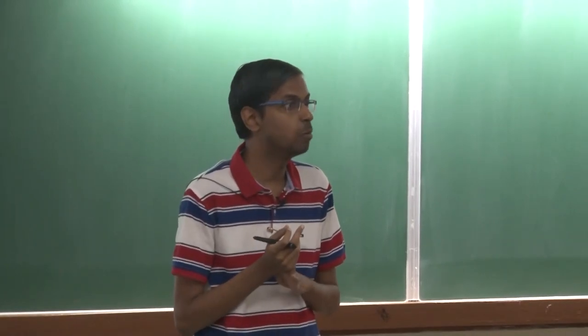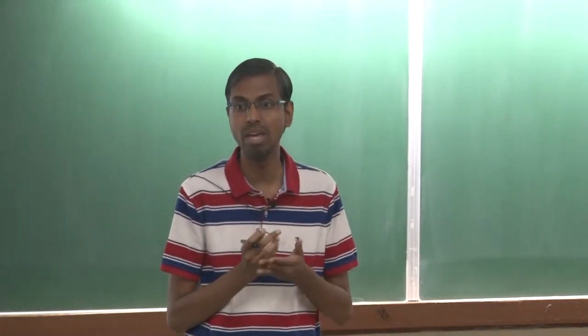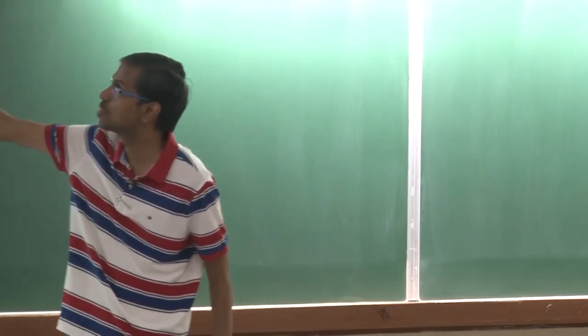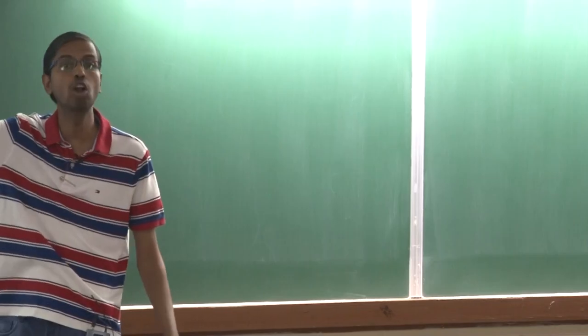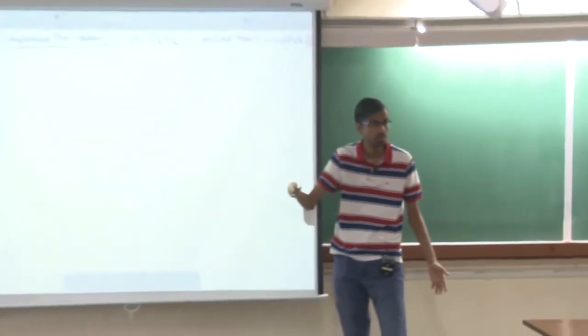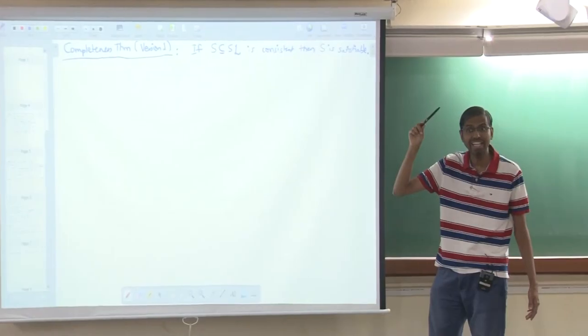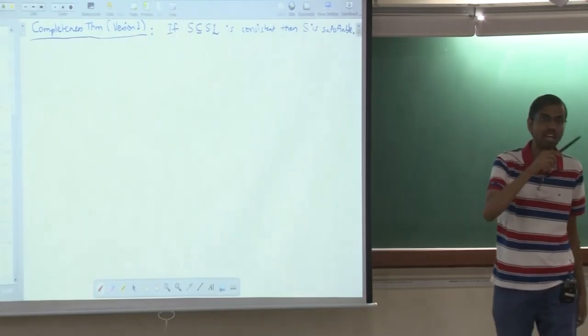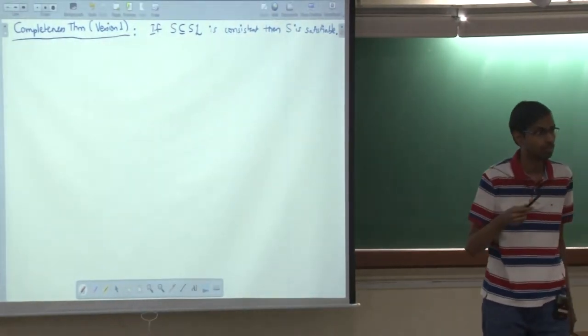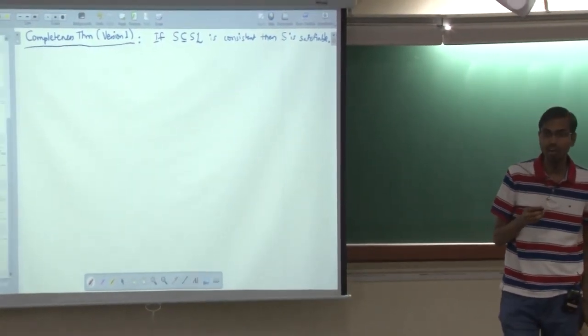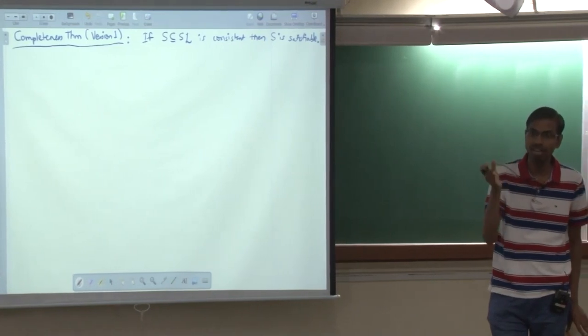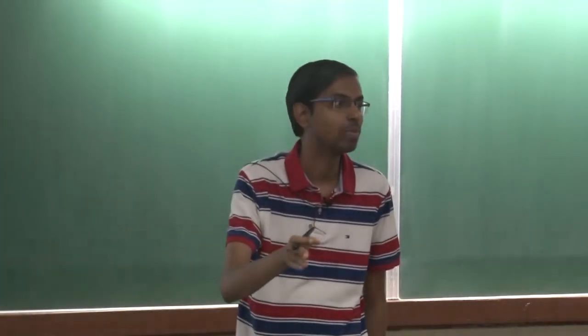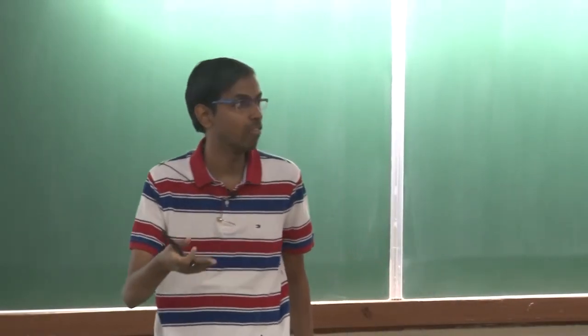That this proof is very far from being constructive. See, S is consistent, so there is something, some T which cannot be proved from S. And from that, we are going to guarantee the existence of a valuation V such that V of capital S is true. Now, some kind of magic must be involved here. And in this class, what is magic? Zorn's Lemma.